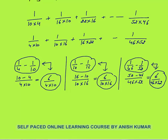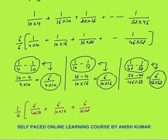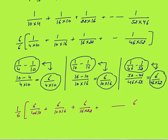Since I need a 6 in the numerator to write each term in the form 1/A − 1/B, I will multiply and divide the entire equation by 6. This leaves 1/6 as a common factor, and the series becomes (1/6) × [6/(4×10) + 6/(10×16) + 6/(16×22) + ... + 6/(46×52)].